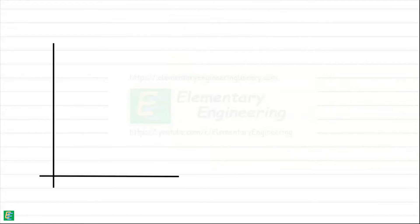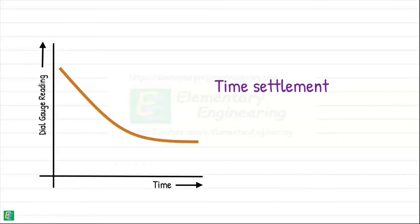We plot the change in dial gauge readings, which represent soil settlement, against time to create a time settlement curve. The curve exhibits similar shape for different soils. But the position of the curve can vary significantly due to the differences in consolidation rates as observed in the case of clay and sand.